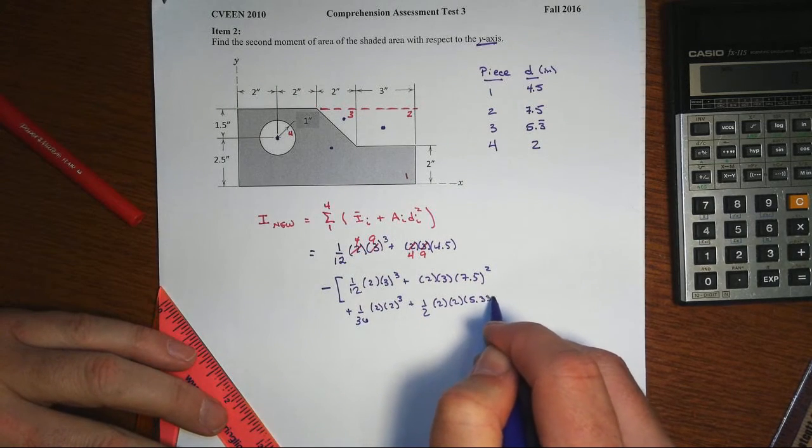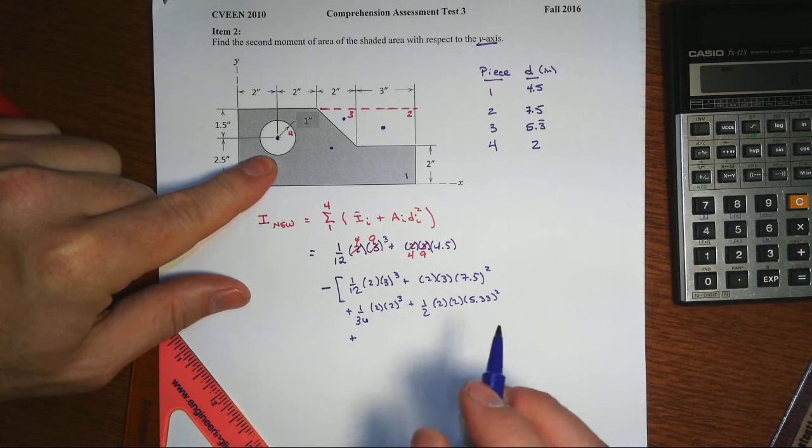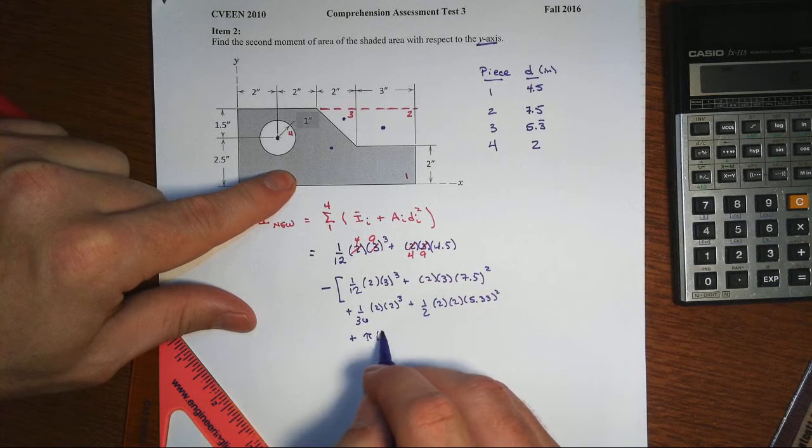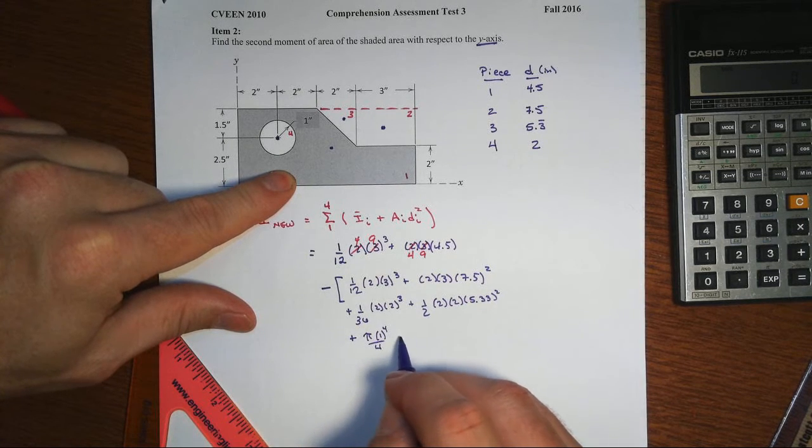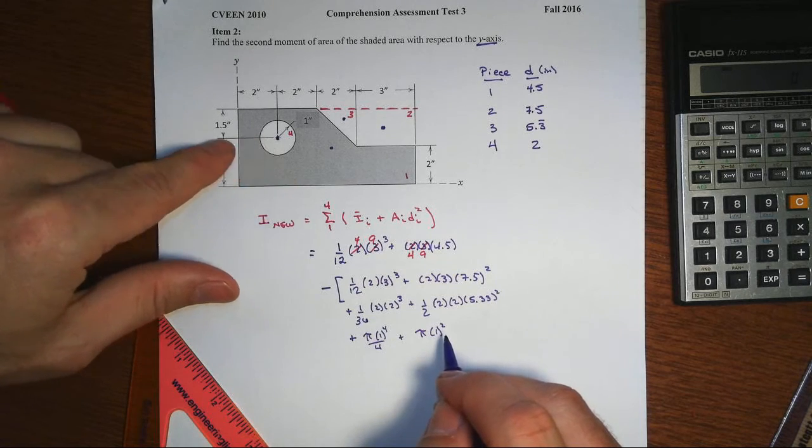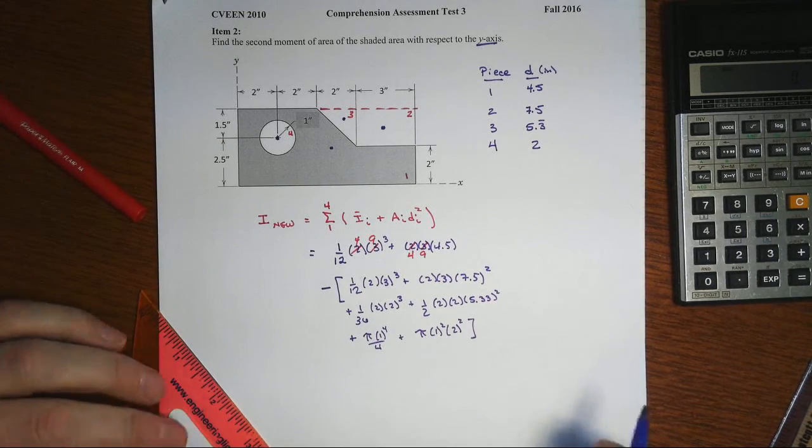And then finally, the second moment of area for the circle, pi times the radius to the fourth over 4, plus its area times the distance that is being moved, squared, like so.